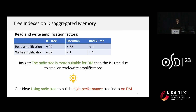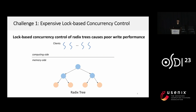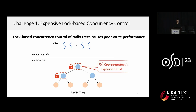However, three challenges should be addressed before the radix tree becomes a high-performance, practical solution on DM. The first challenge is the expensive lock-based concurrency control. Existing radix trees adopt coarse-grained lock-based algorithms to perform concurrency control. However, remote lock operations are expensive on DM and lead to poor write performance.